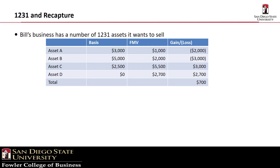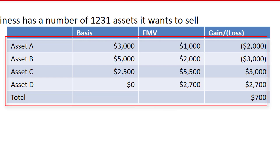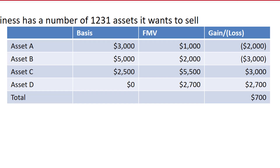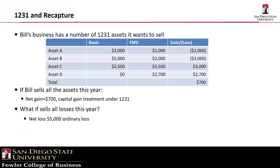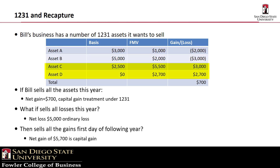But before we burst our bubble, we need to talk about Bill. Bill operates a business, and he has a number of business assets he'd like to sell. It's getting to be nearly year-end, and Bill needs to make a decision. Bill examines the expected amount realized and the adjusted basis of the properties, and notes that if he sells all of them this year, the result will be a $700 gain. Since the assets are all 1231 property, Bill knows that he'll receive capital treatment for all of them. But Bill is a friend of Swiper, and Swiper has a better idea — he tells Bill to sell only the loss properties this year, getting a $5,000 ordinary loss, and then on the first day of next year, sell all the gain properties and get a $5,700 capital gain.